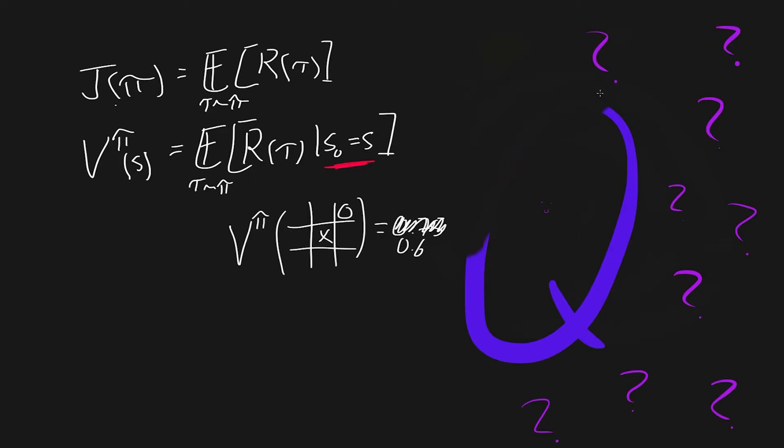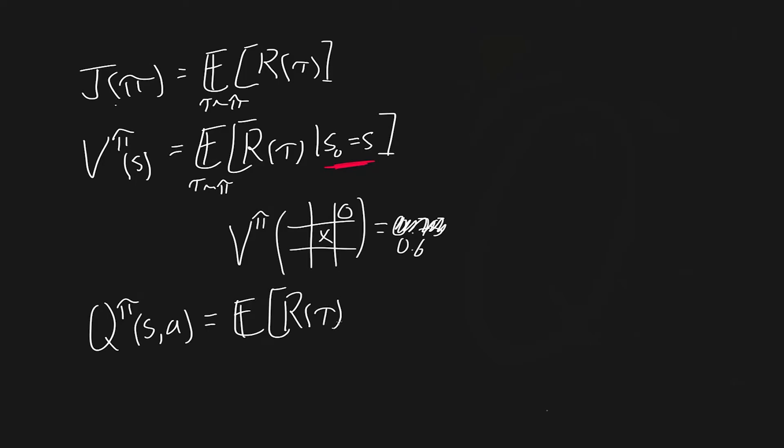So that's what value is. Now let's get into Q values. Let me write out the formula for you. Q value of a policy, and again Q value is always attached to a policy, at a state and action equals the expected returns of trajectories given S0 equals S and A0 equals A, where trajectories are sampled from our policy.